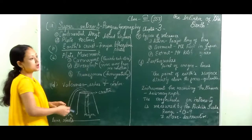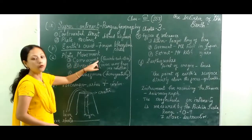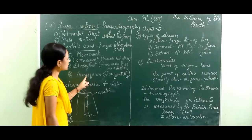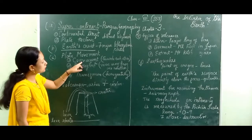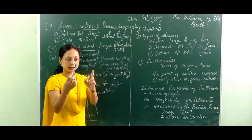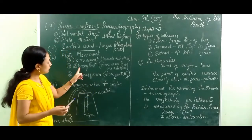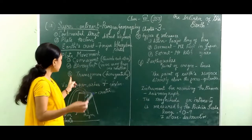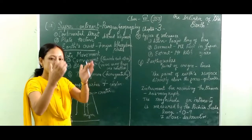Plate movement takes place in three different ways. Number one is the convergent movement. The second one is the divergent movement, and the third one is the transform movement. Convergent movements are those movements where two plate tectonics come towards one another. Divergent movements are those movements where two plates move away from one another. Transform movements are those movements which take place horizontally.